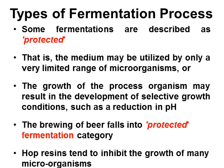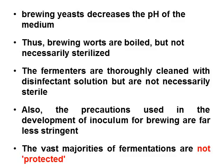The brewing of beer falls into this category. Hop resins tend to inhibit the growth of many microorganisms, and the growth of brewing yeasts tends to decrease the pH of the medium. Thus, brewing worts are boiled but not necessarily sterilized, and the fermenters are thoroughly cleaned with disinfectant solution but are not necessarily sterile. Also, the precautions used in the development of inoculum for brewing are far less stringent than, for example, in an antibiotic fermentation. However, the vast majority of fermentations are not protected and, if contaminated, would suffer some of the consequences previously listed.